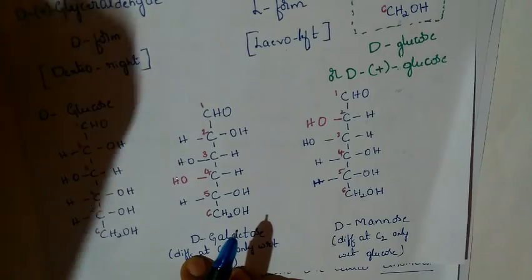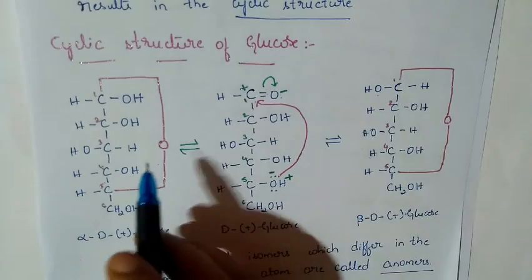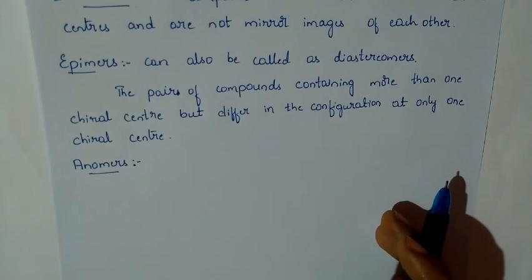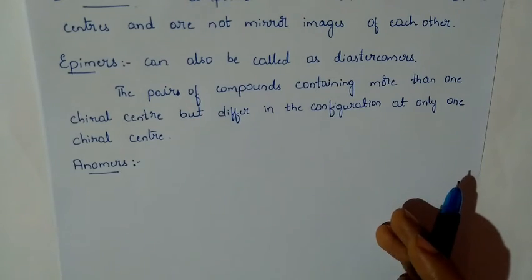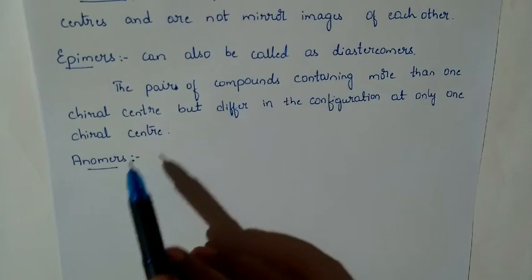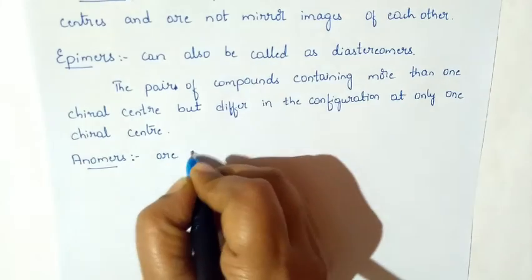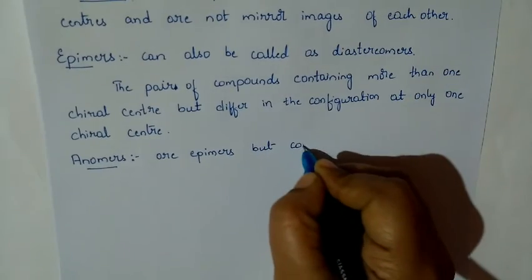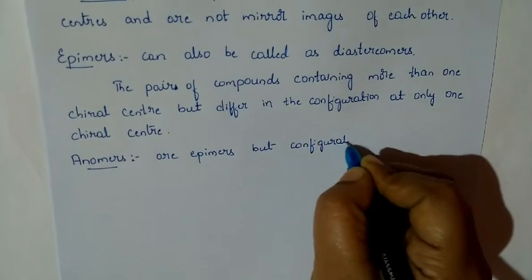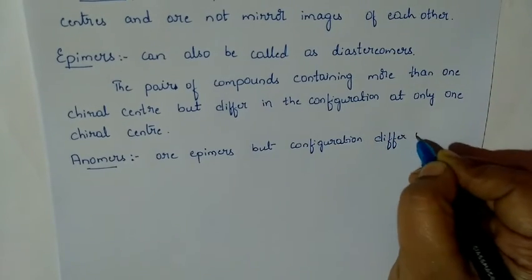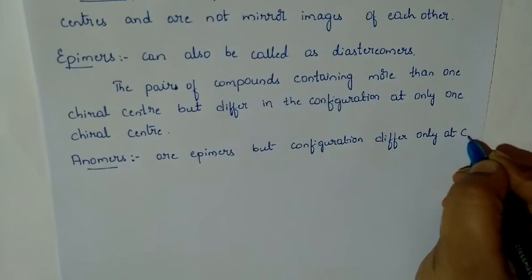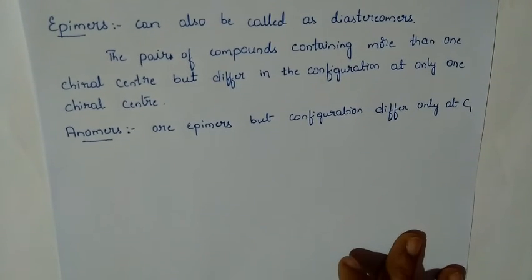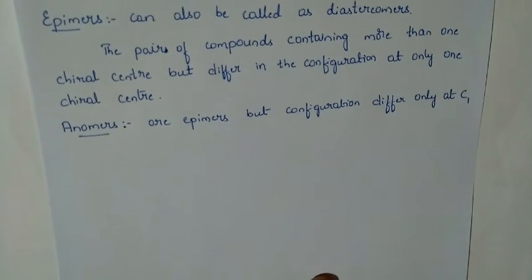If the difference takes place at only the first carbon, then those epimers are also called anomers. So epimers are compounds that may contain more than one chiral center, but the pair differs at the configuration of only one chiral center. Anomers are also epimers, differing at only C1 (the first carbon atom). We shall draw a chart to summarize anomers, epimers, diastereomers, and enantiomers.